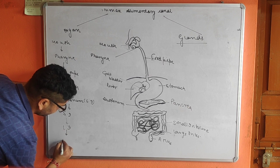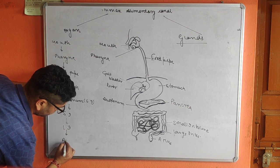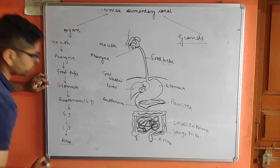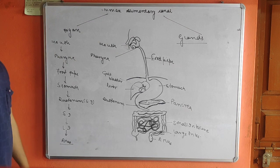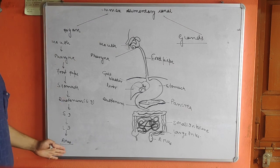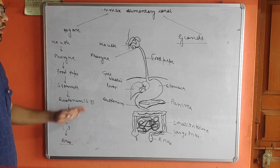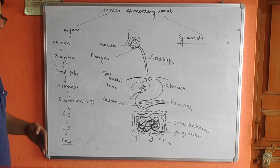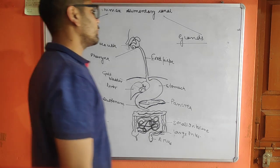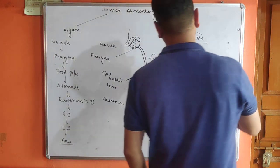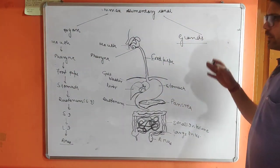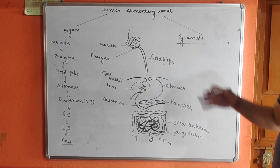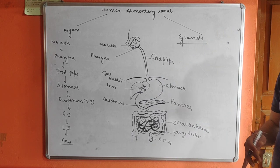Finally, the undigested food is removed through the anus. This is an overview of the organs involved in the digestive system. Now we need to discuss the glands which are involved in the digestive system.